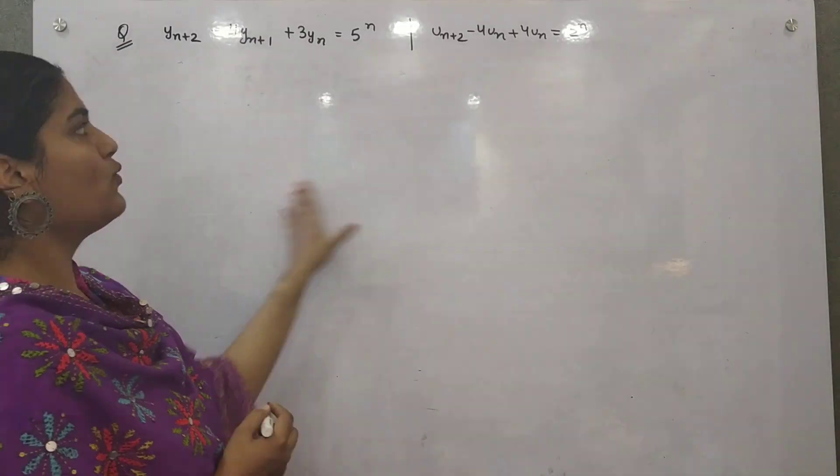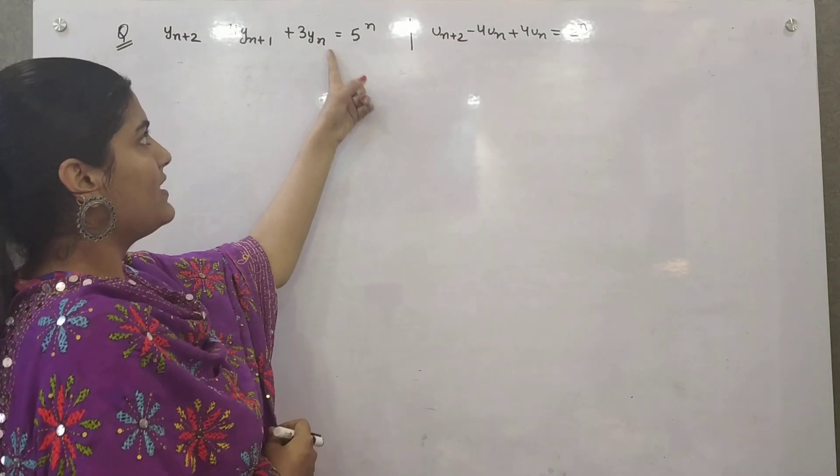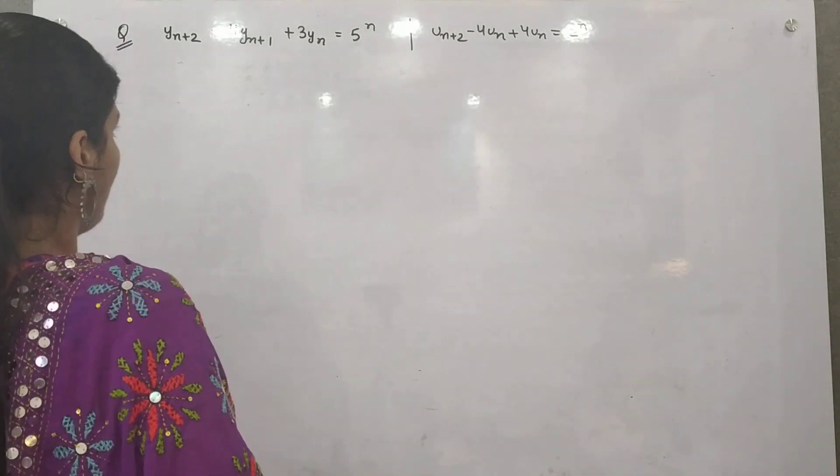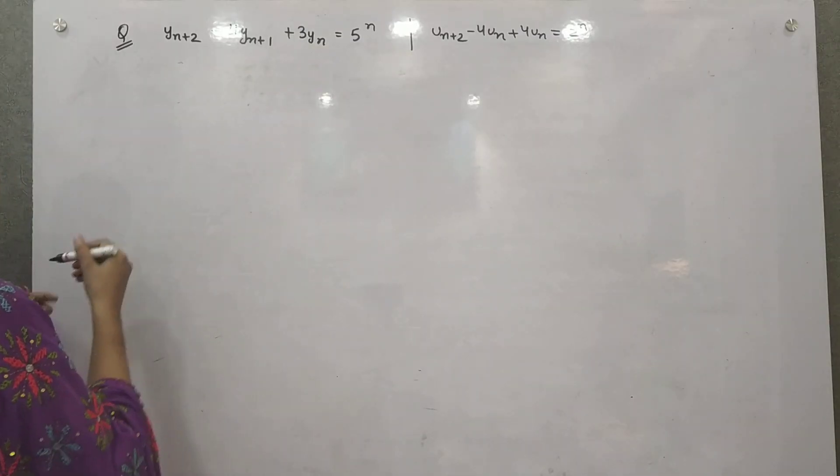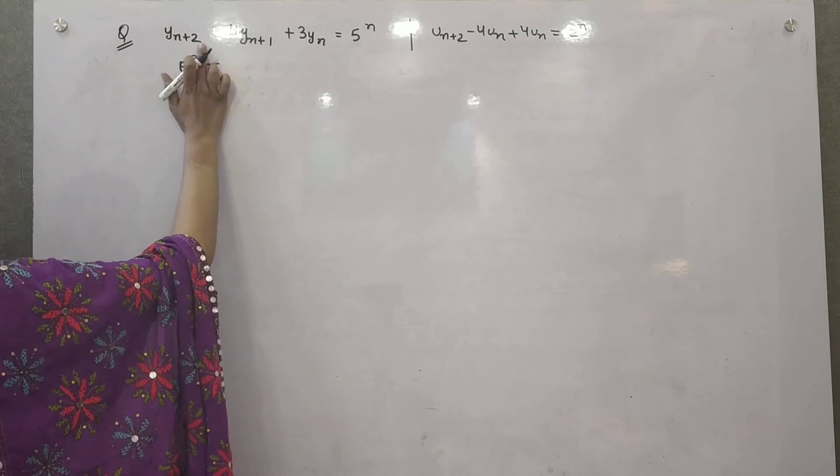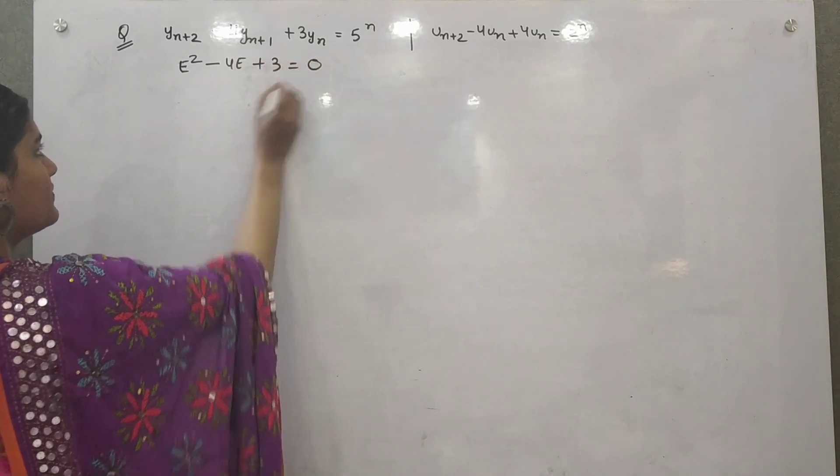You have two examples. Let's see. If you observe, it equals a raised to power n. So how can we solve it? First of all, you have to make the auxiliary equation, which is e square of order n plus 2. So e square minus 4e plus 3 equals 0.